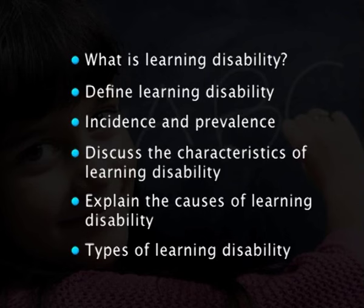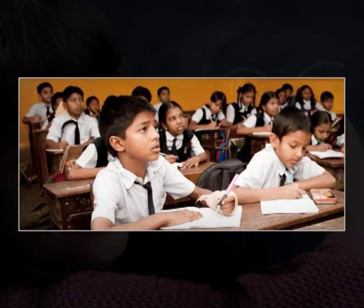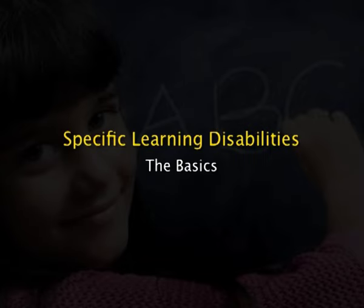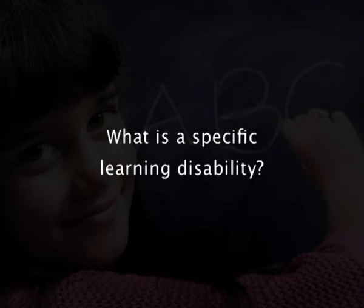That is why it is so very important that every teacher learns about it so that any child in the class can be helped. We need to understand: what is learning disability, its definition, incidence and prevalence, the characteristics of learning disability, the causes of learning disability, and the different types of learning disability that affect a child's classroom learning. We are going to talk about the specific learning disabilities — the basics. What is it, and how are we going to address this particular issue?